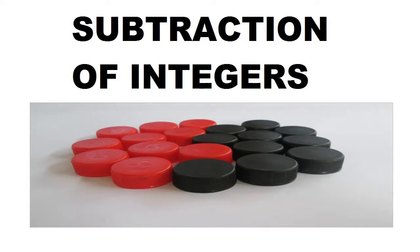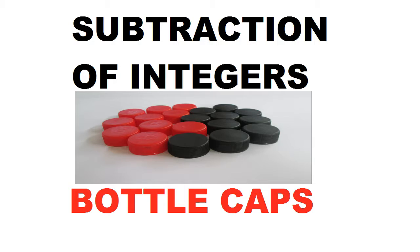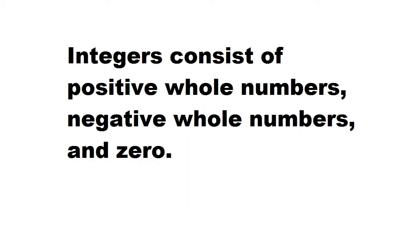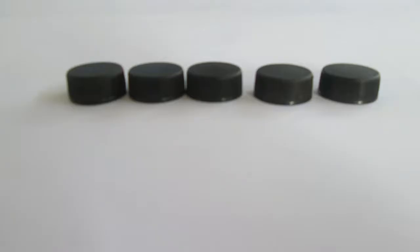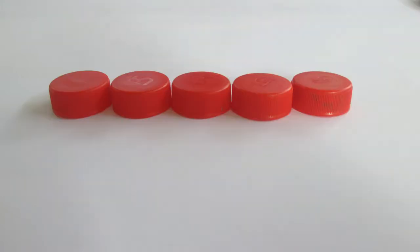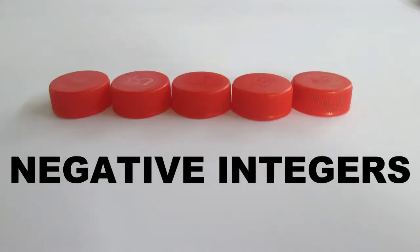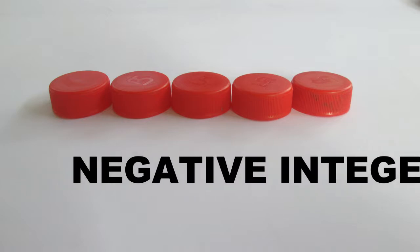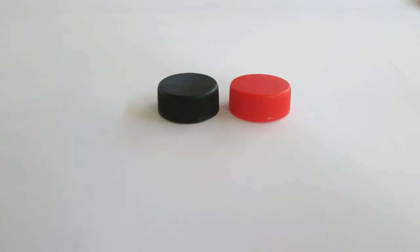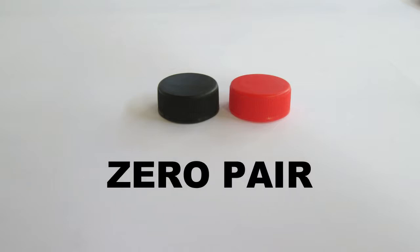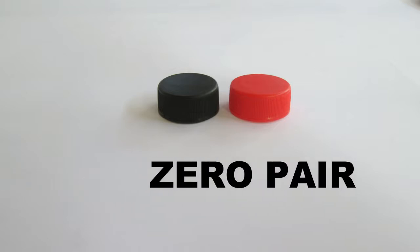Subtraction of integers using bottle caps. Integers consist of positive whole numbers, negative whole numbers, and zero. In this video, black caps represent positive integers. Red caps represent negative integers. Zero is represented by a black cap and a red cap, which we refer to as a zero pair.